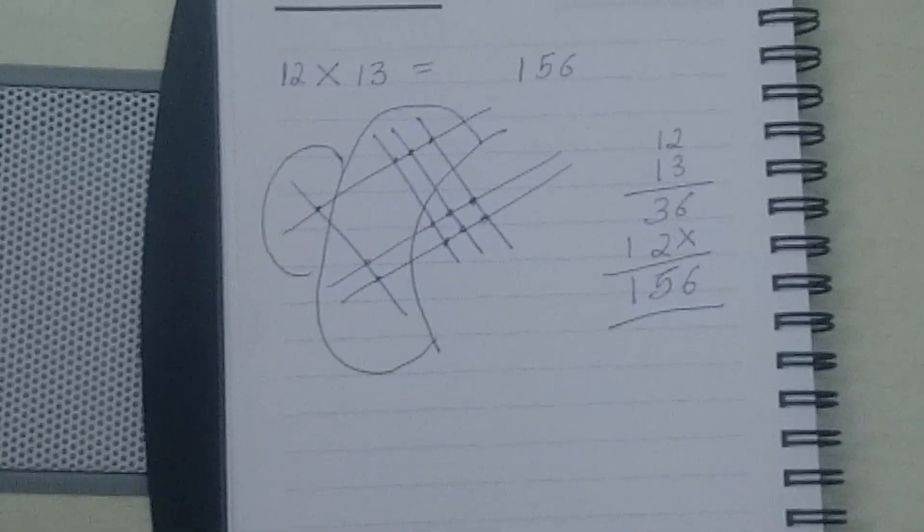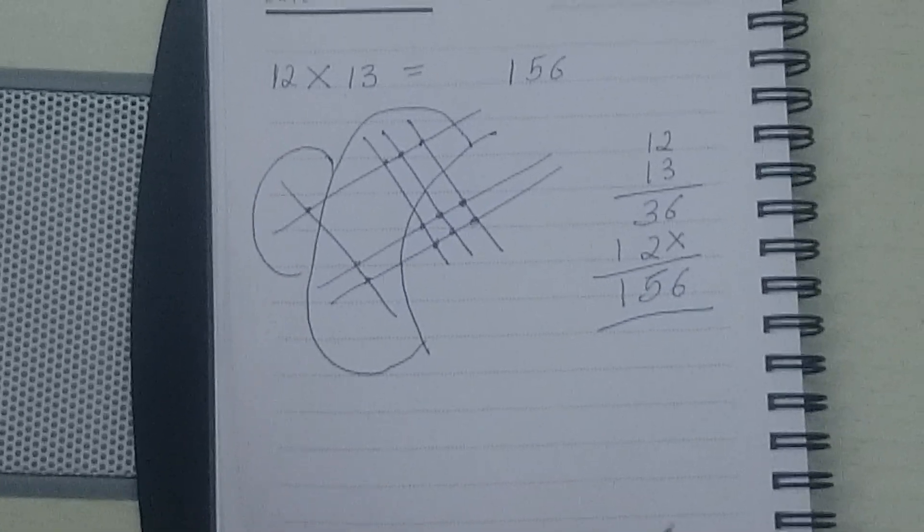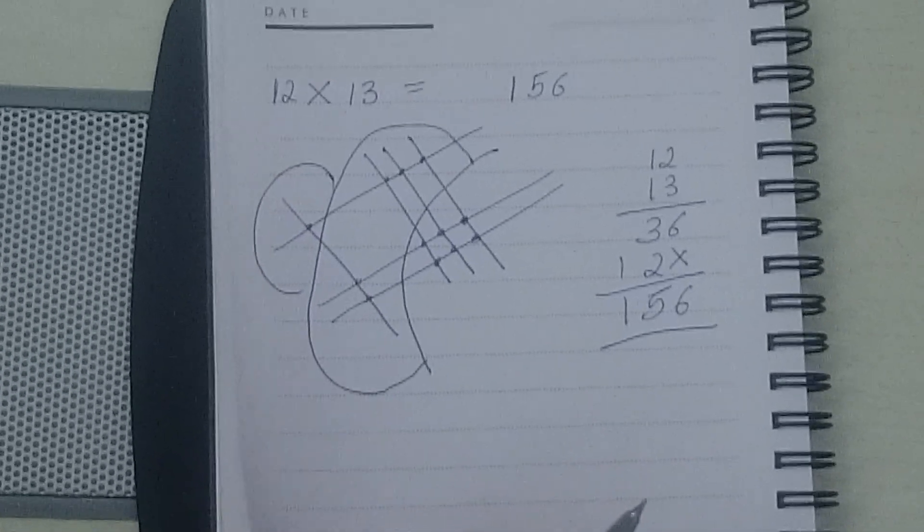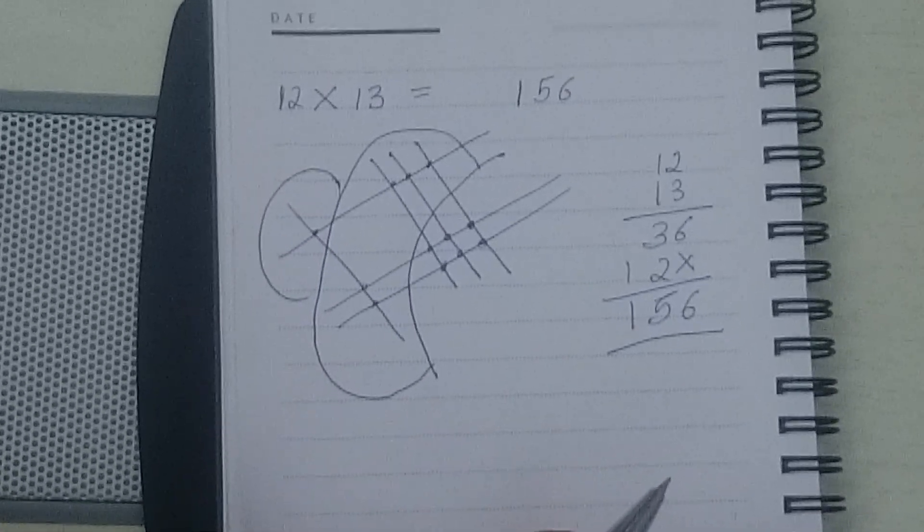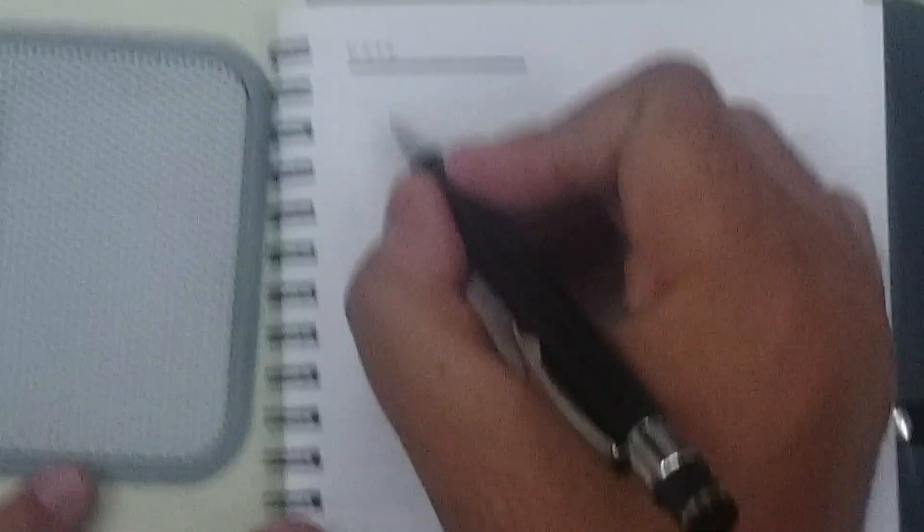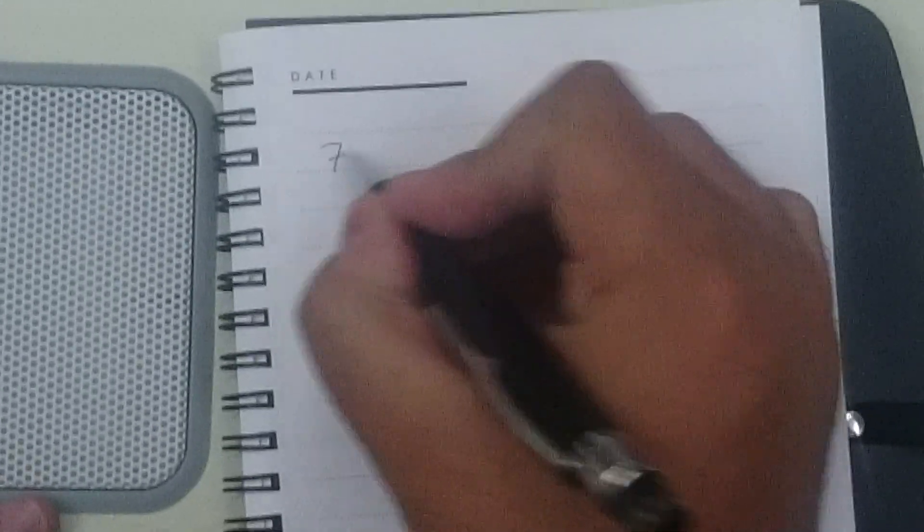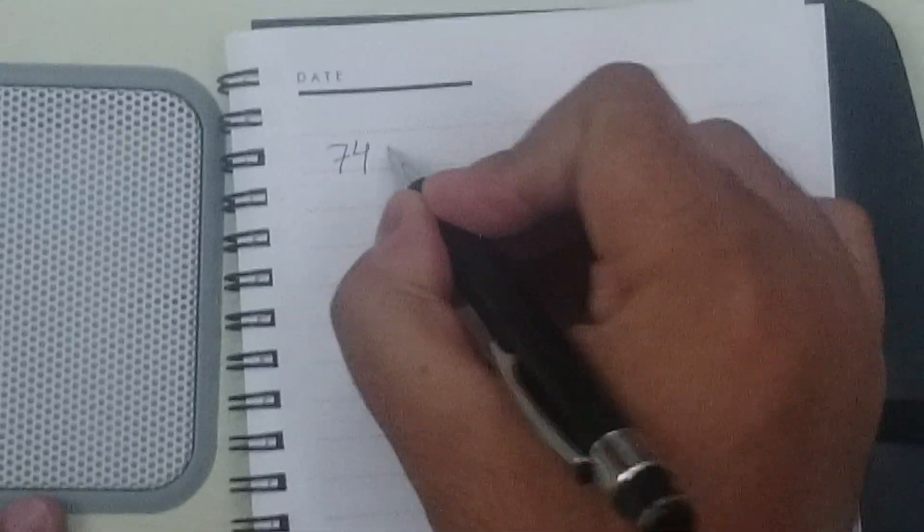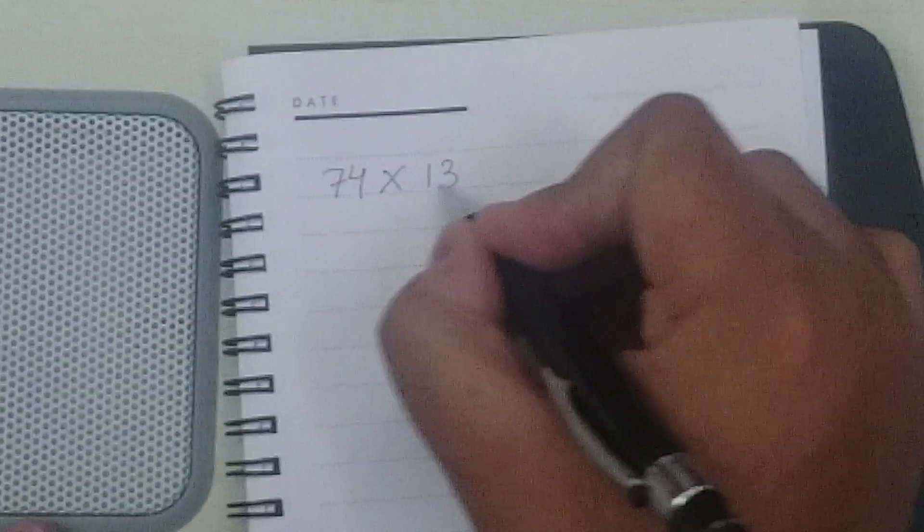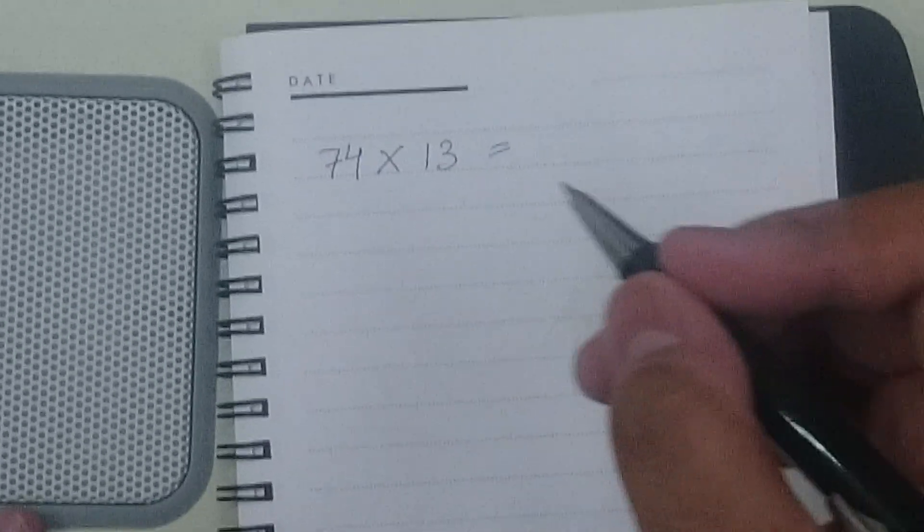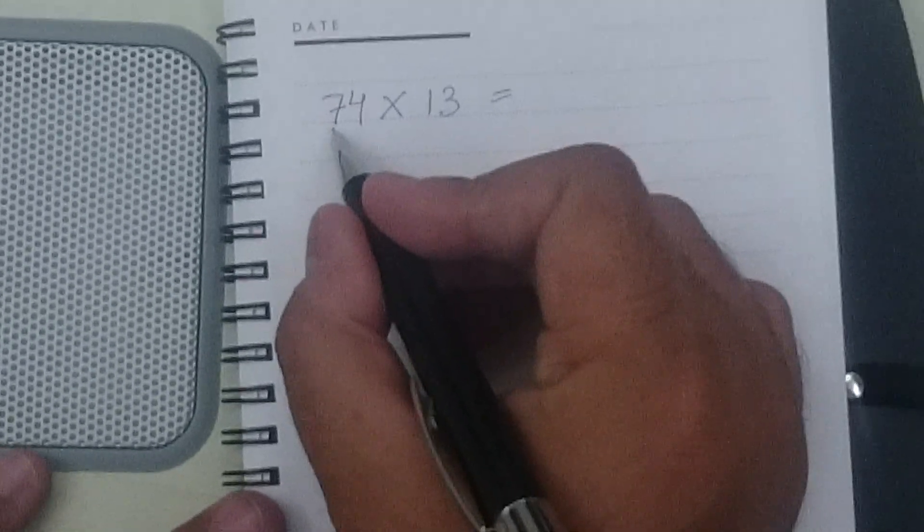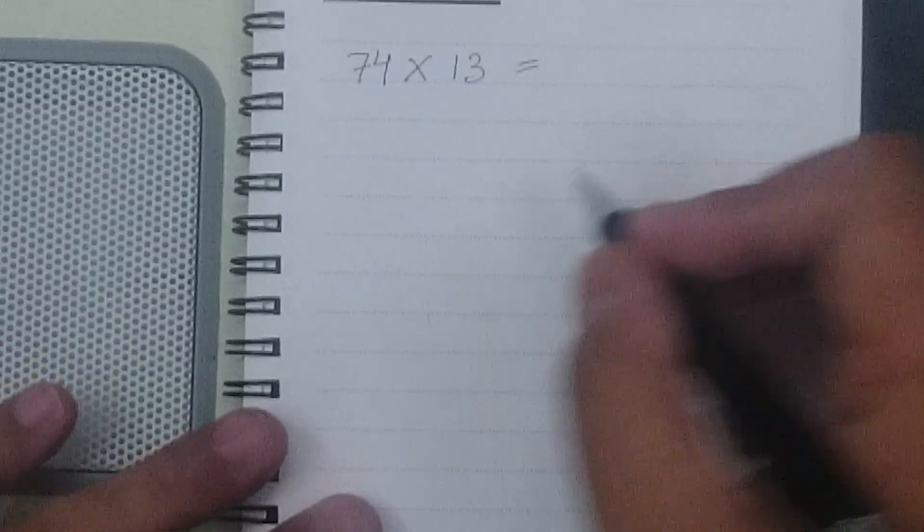There you go, it's absolutely simple and anybody can do it. Now let's try a little bit more difficult number than this. Let's try doing multiplication of 74 into 13. Now mind you, there will be a lot of lines since it's 7. So we'll have to be careful now.